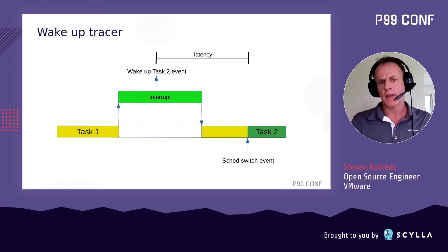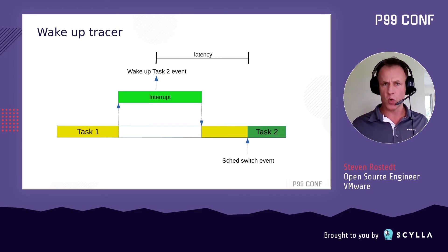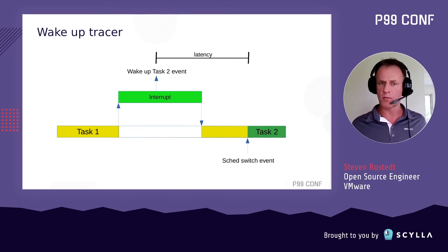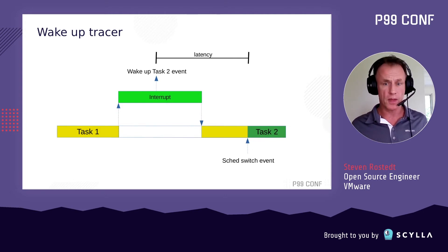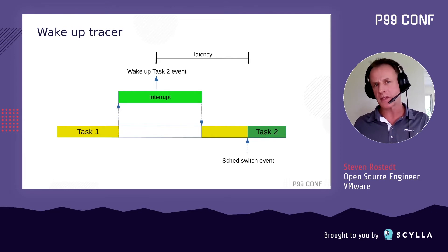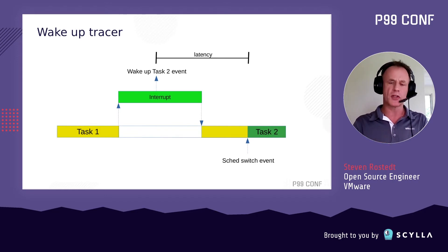Let's look at wake-up latency. The wake-up latency tracer works by recording an event when a task is woken up and when it's scheduled in. Task one is going along, an interrupt comes in and wakes up task two — we measure that length of time. We measure from when the wake-up occurred to when it actually schedules in. That latency is usually good enough, though the real latency starts a little earlier when the interrupt triggered.